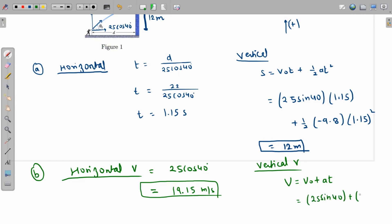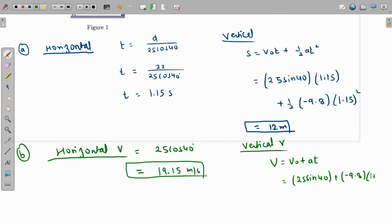acceleration is minus 9.8, and the time of flight we already have as, let's try to make some space over here, as 1.15. So this value comes out as 25 times sine of 40 minus 9.8 times 1.15. So this value comes out as around 4.8 meters per second. That is the vertical component of the velocity while hitting the wall.